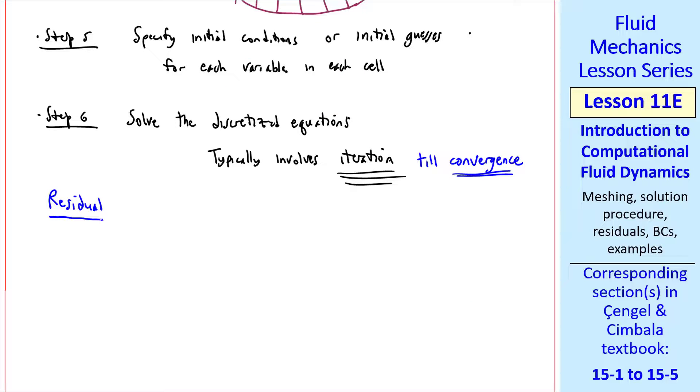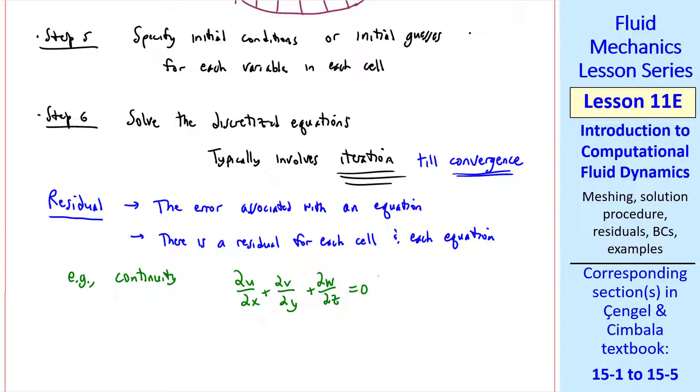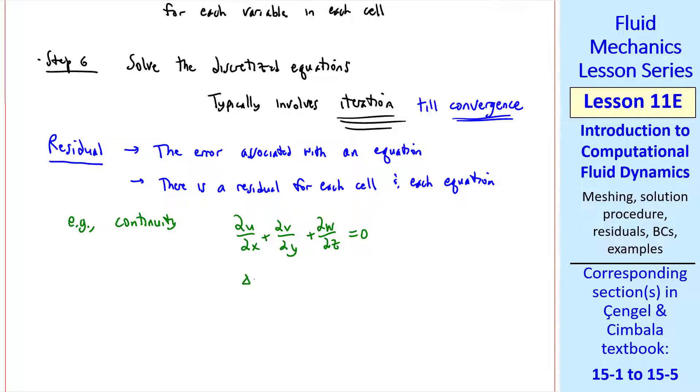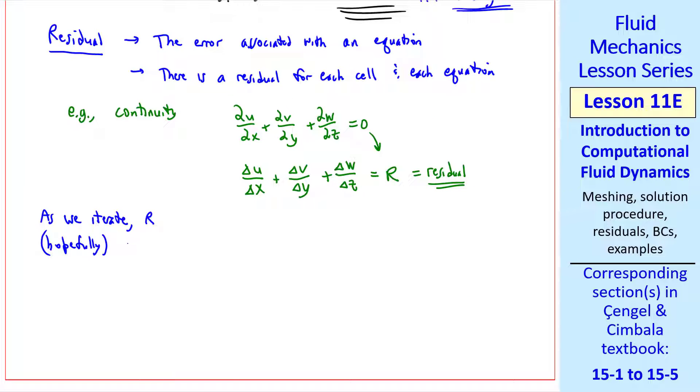Here I define something called a residual. You can think of a residual as the error associated with an equation. There's a residual for each cell and each equation. As a simple example, let's take continuity. Here's the differential equation form. Suppose you're doing a very simple-minded discretization that just sets these as delta U over delta X, delta V over delta Y, and delta W over delta Z. We want this to be zero, but it won't be. It'll be some value R, which is the residual. As we iterate, residual R hopefully decreases. If the horizontal axis on this plot is number of iterations and residual at a cell is plotted on the vertical axis, we typically start at some high value and then hopefully level off. In this plot, this is our conservation of mass residual.